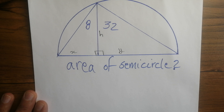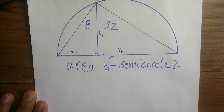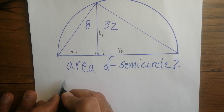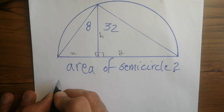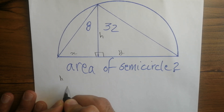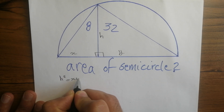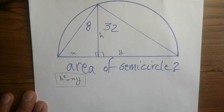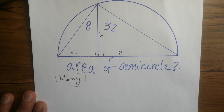Based on a very beautiful theorem in geometry called the intersecting chords theorem — the proof of which is out of scope here, but you should know this one; if you don't, please search it online — based on this theorem, h squared equals x times y. This is probably the most important relationship we will need today to find the area of the semicircle.